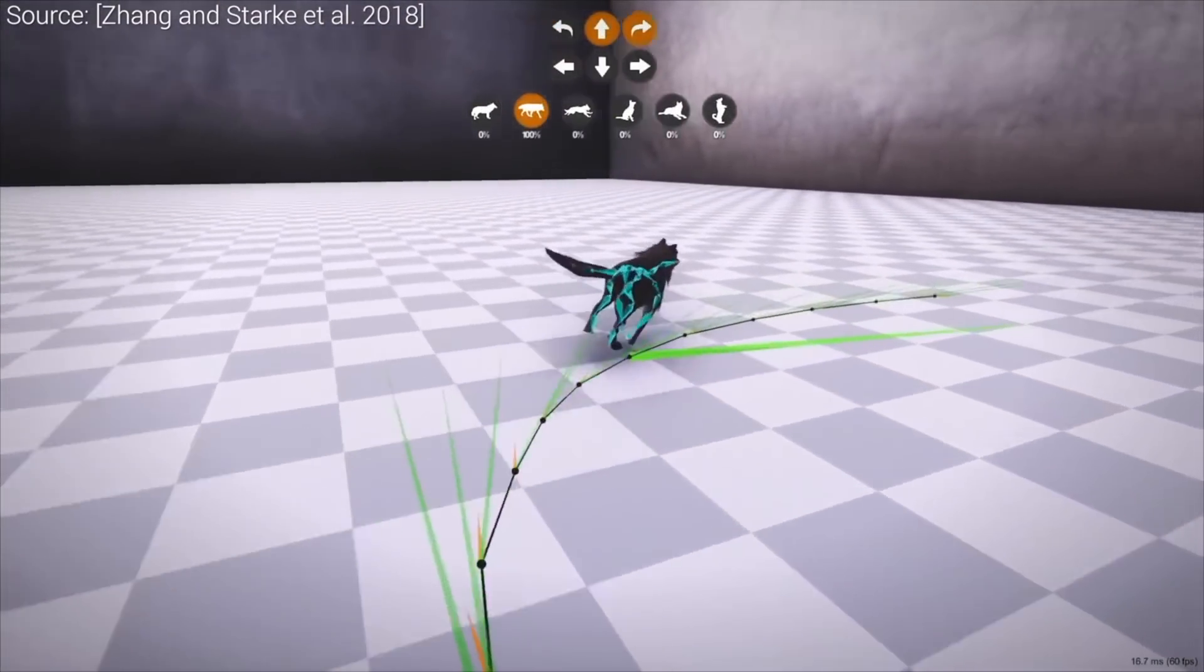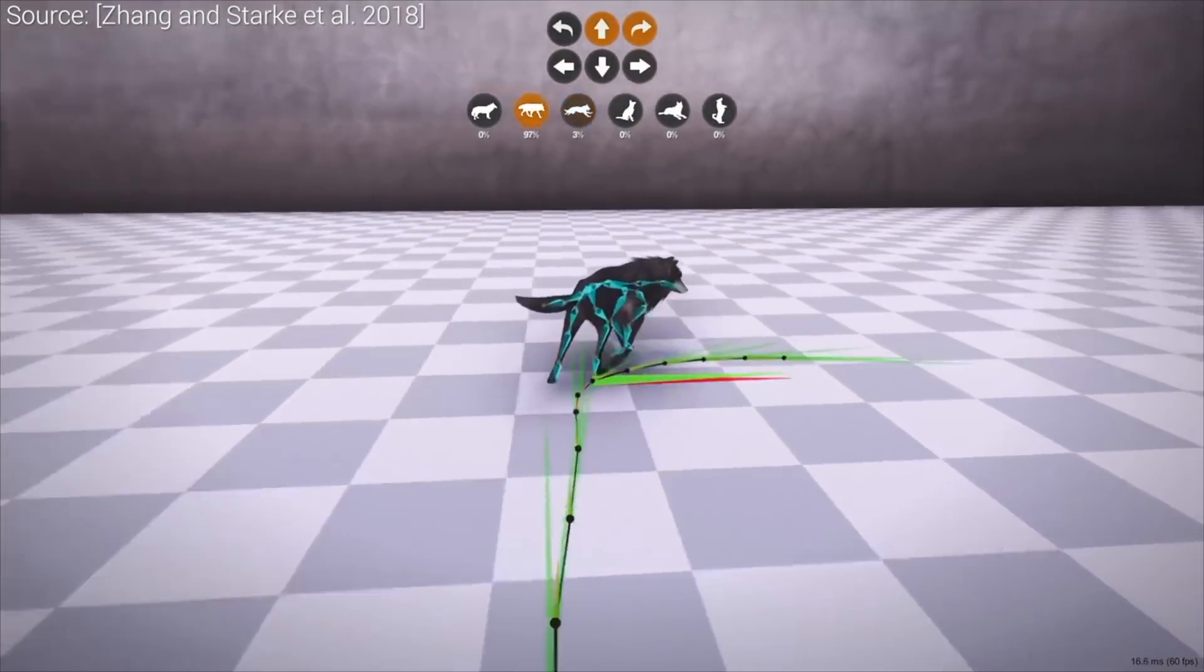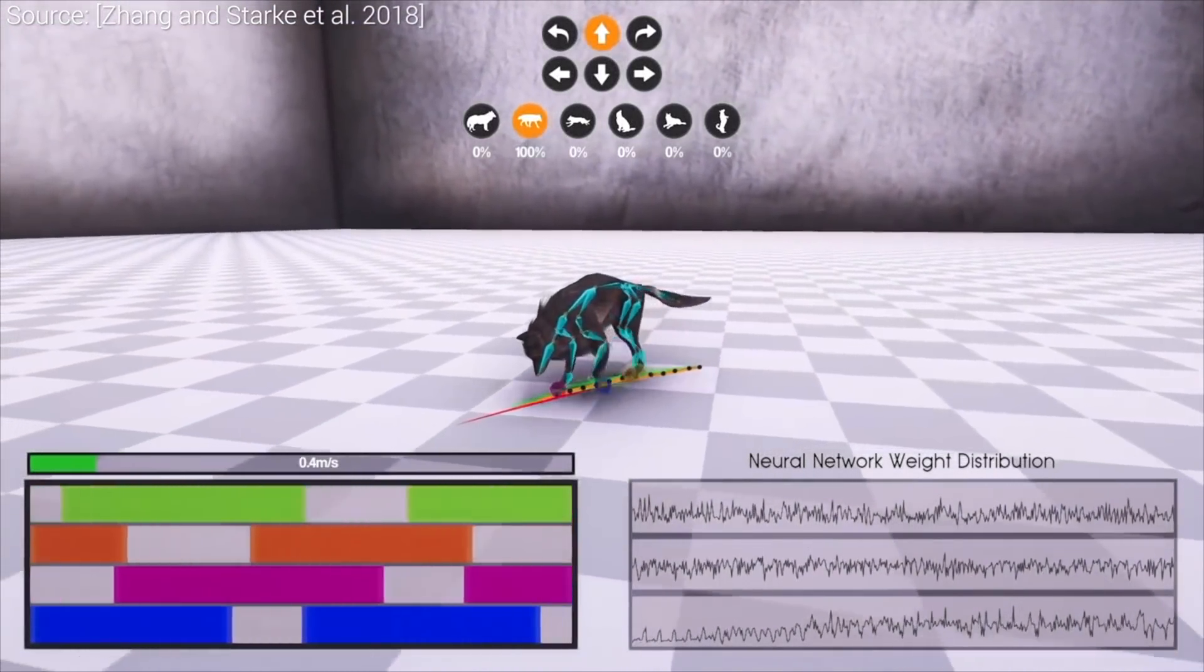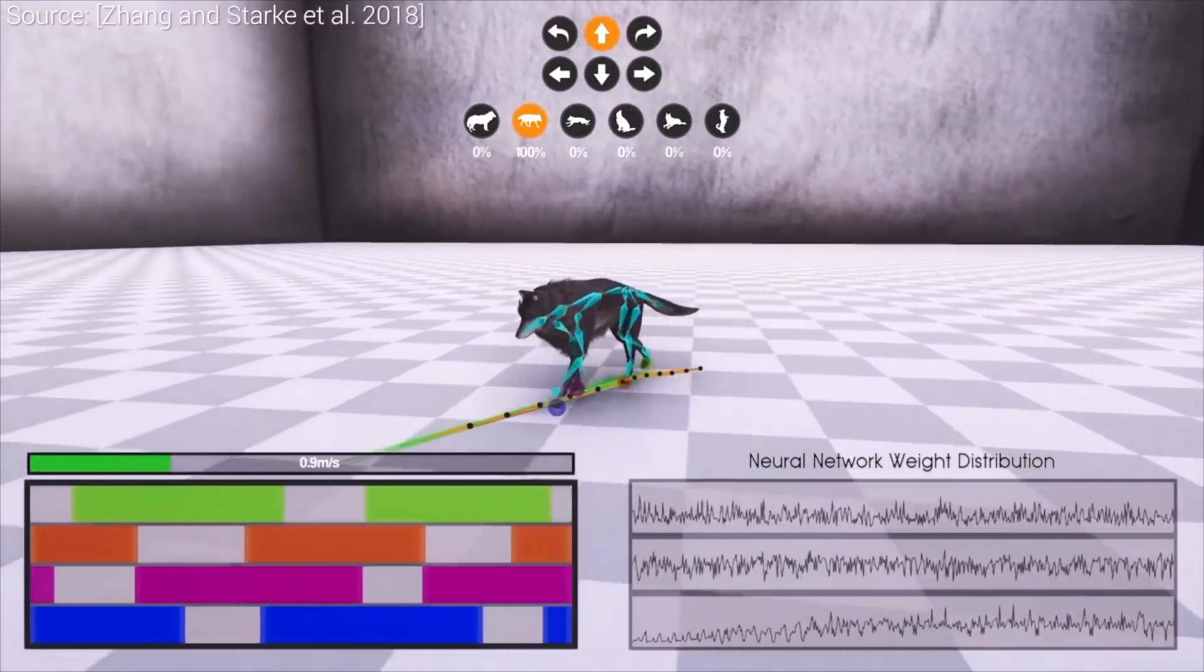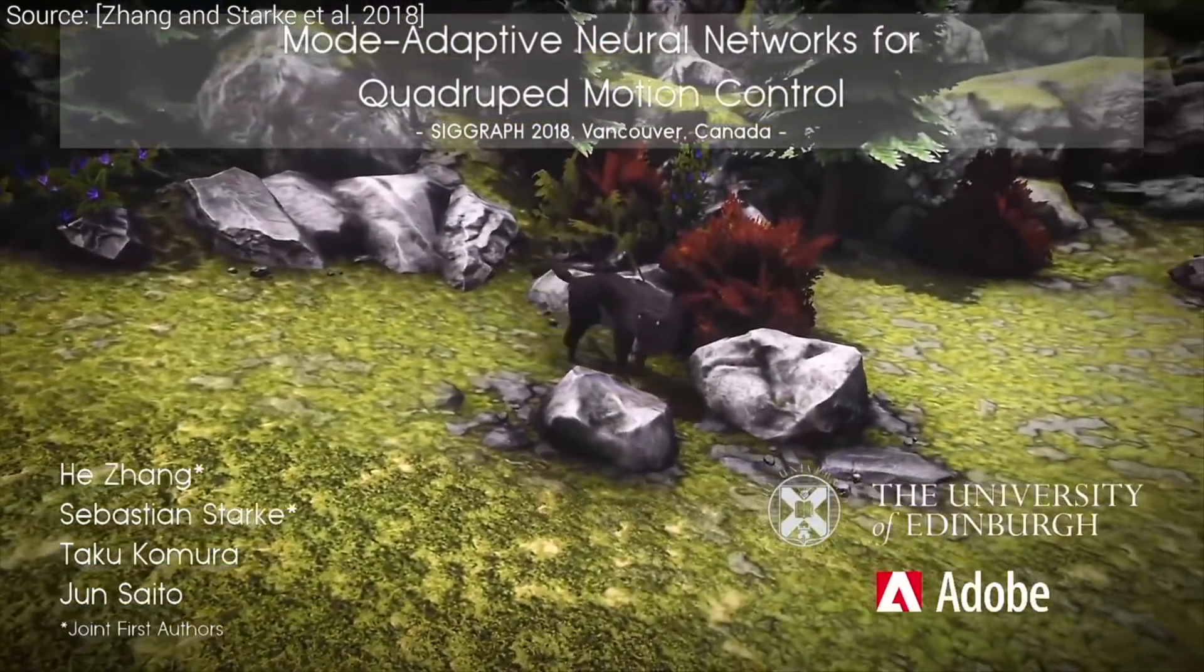Motion capture means that we put an actor, in our case a dog in the studio, and we ask it to perform sitting, trotting, pacing and jumping, record its motion, and transfer it onto our virtual character.